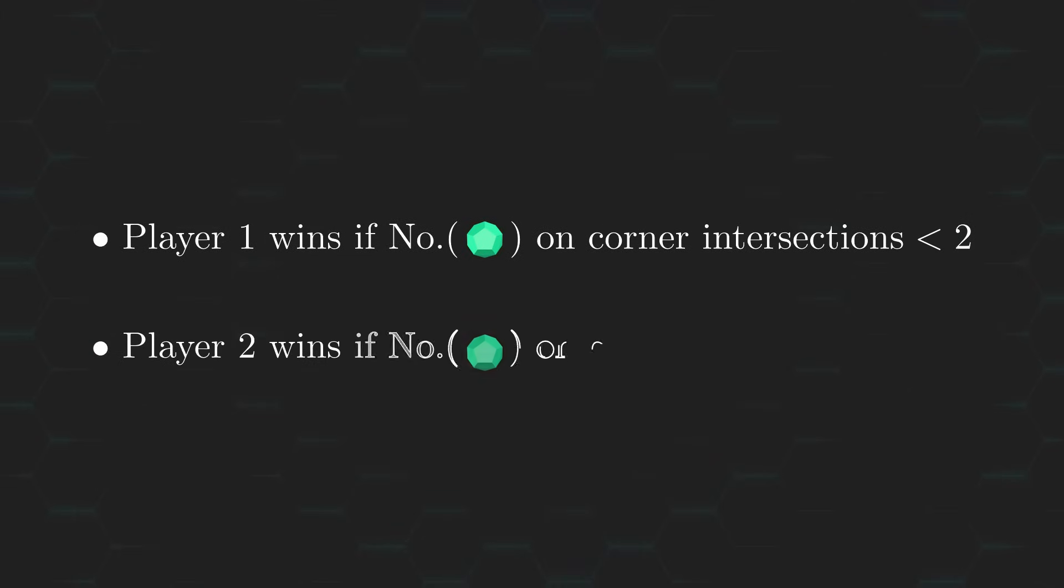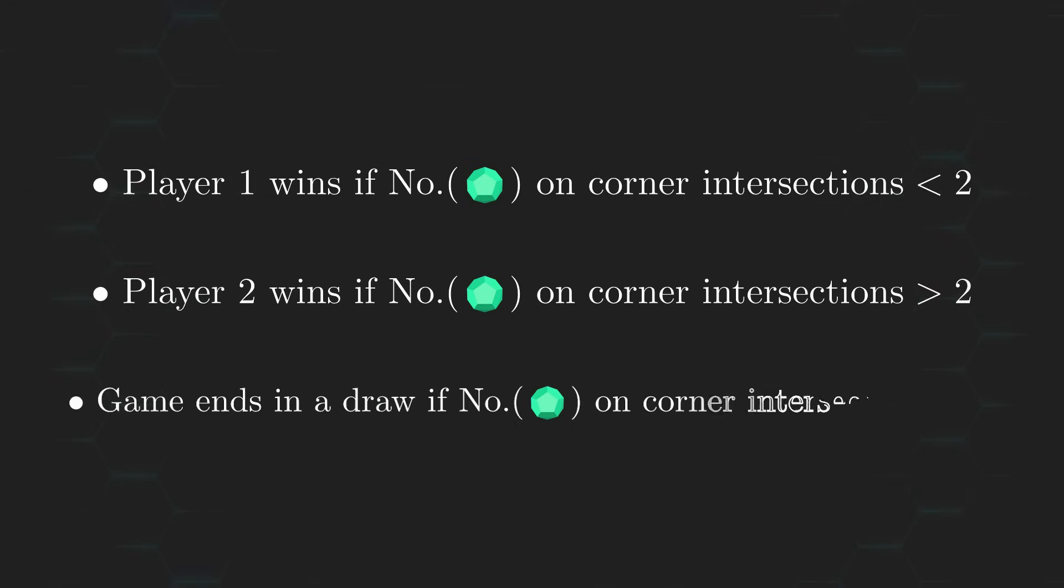We'll say that player one wins if the game ends and there are less than two greenstones on corner intersections. While player two wins if the game ends and there are more than two greenstones on corner intersections. And if exactly two greenstones are on corner intersections, then the game ends in a draw.